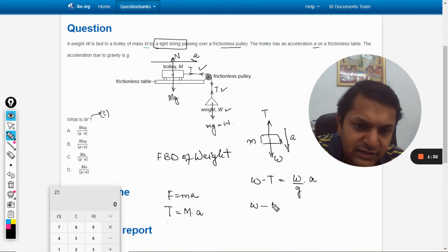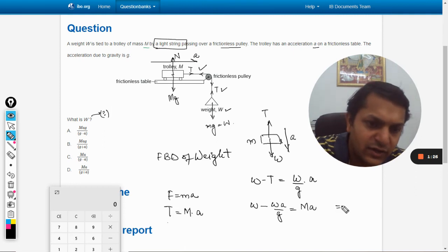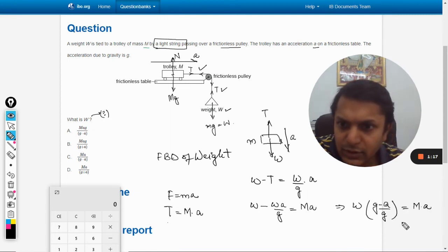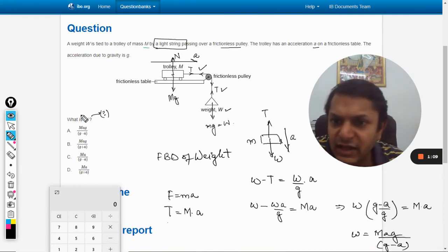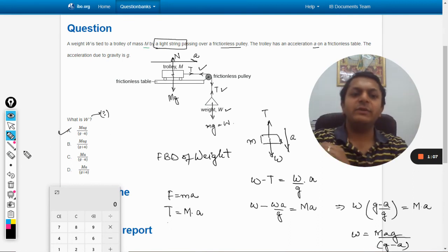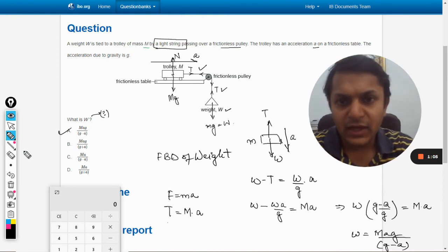So I can take W to this side. W will be taken as common, so it will be ma times g divided by g minus a. So the answer will be option a.